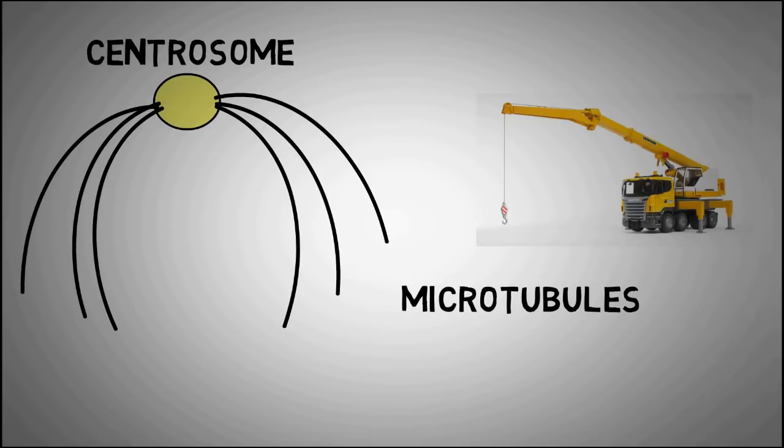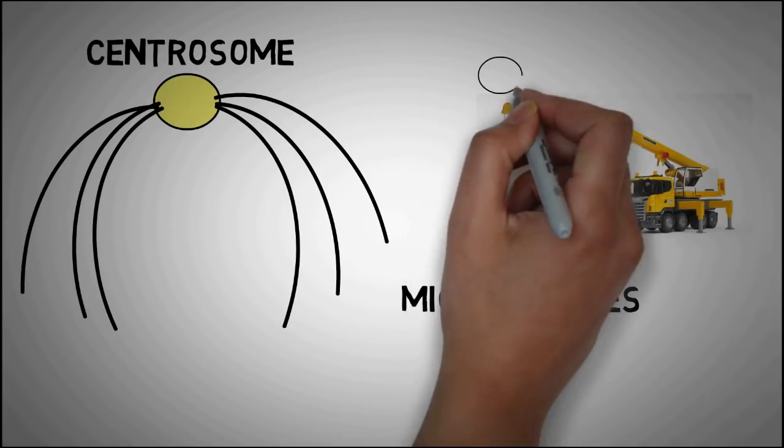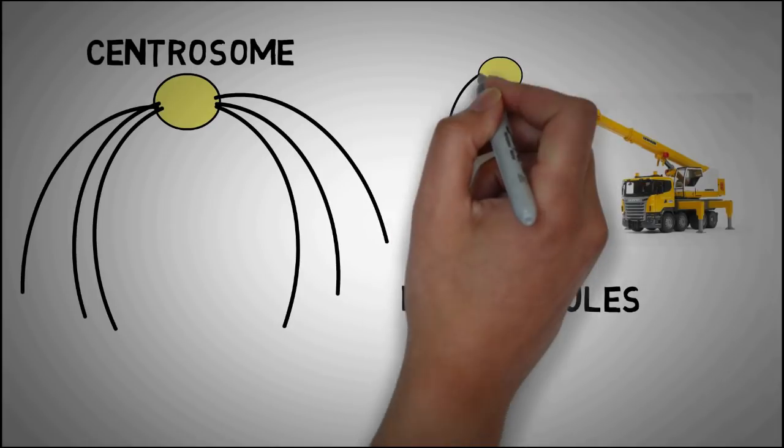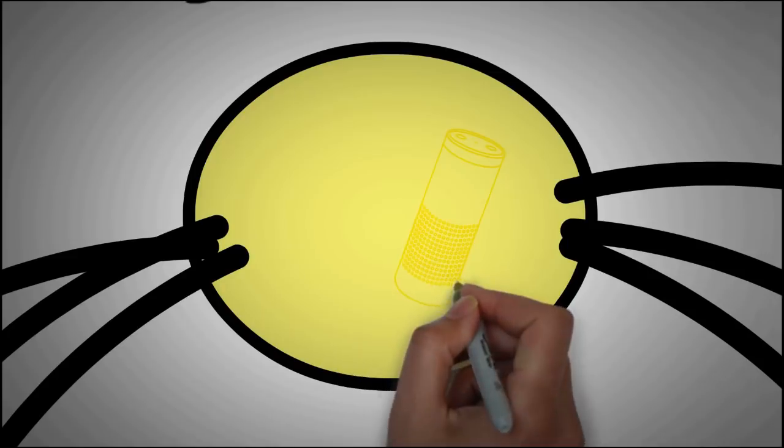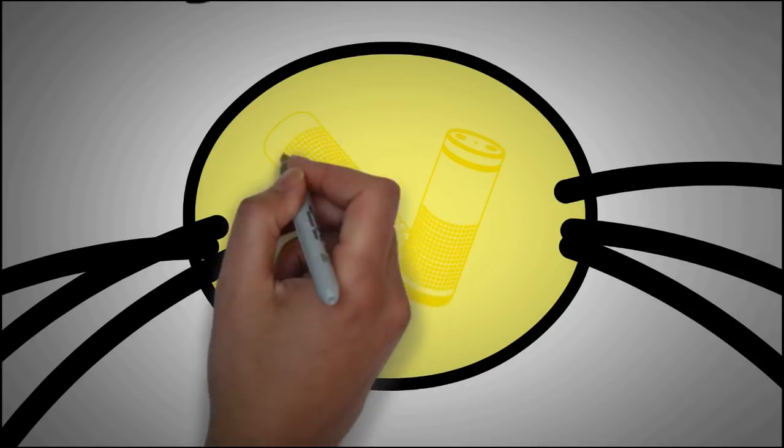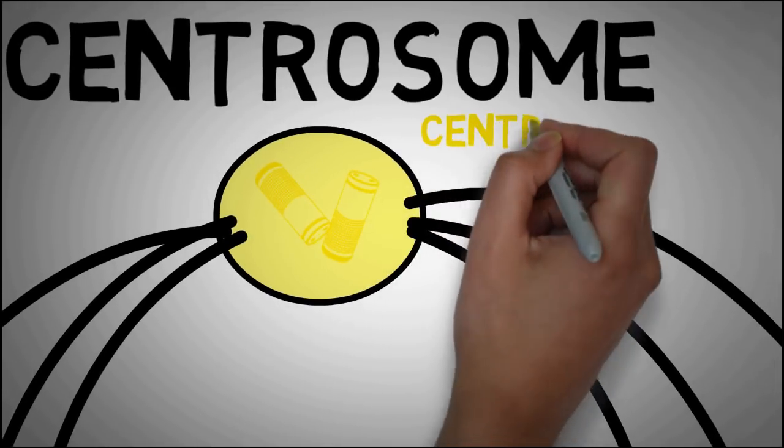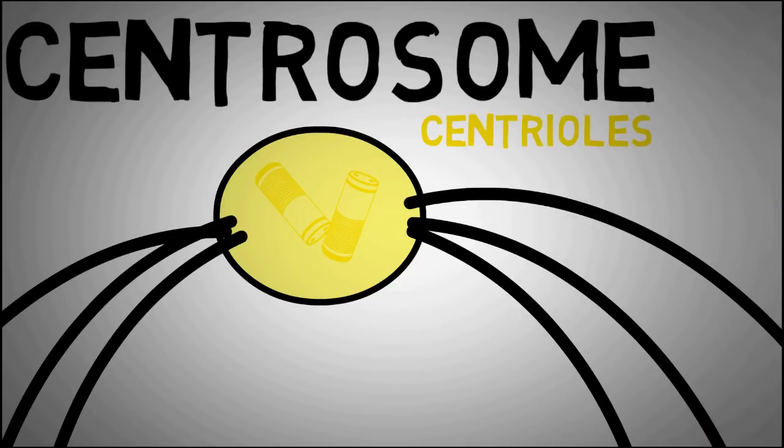The functioning of the mitotic spindle can be compared to a lifting crane. The centrosomes can be compared to a motor and the microtubules are just like ropes which pull anything that is attached to them. If we look closely at the structure of the centrosome, we can see that it is made up of two centrioles which are cylindrical structures that are made up of the protein tubulin.